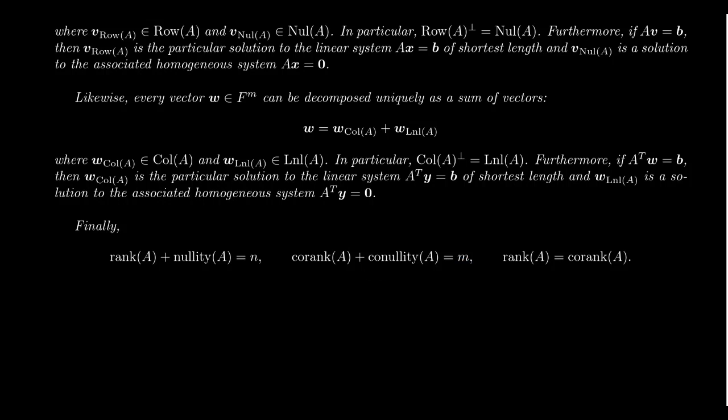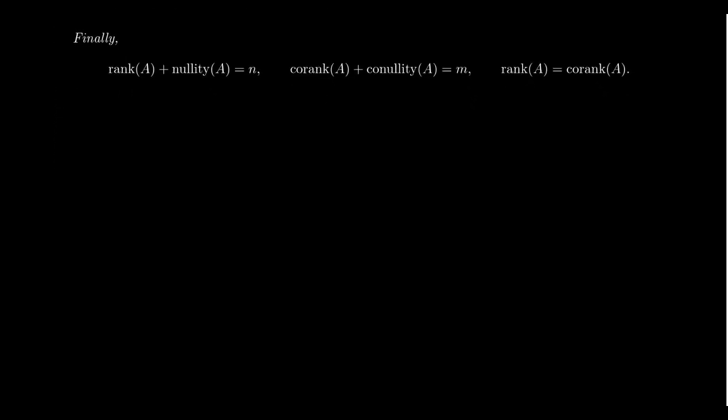The number of rows is M, N is the number of columns. And the rank of A always equals the co-rank of A, which is the number of pivots in the echelon form. So that's the statement, and that was quite verbose.